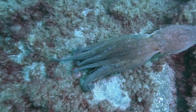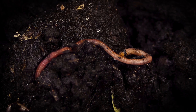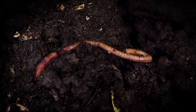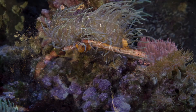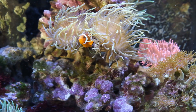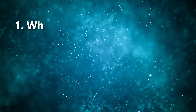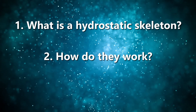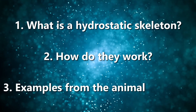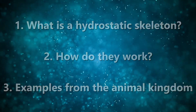From the graceful and agile movements of an octopus to the incredible flexibility of an earthworm, hydrostatic skeletons play a crucial role in shaping the biomechanics of various creatures across the animal kingdom. In this video, we will explore what hydrostatic skeletons are, how they work, and the incredible ways in which animals have evolved to utilize this unique skeletal system.